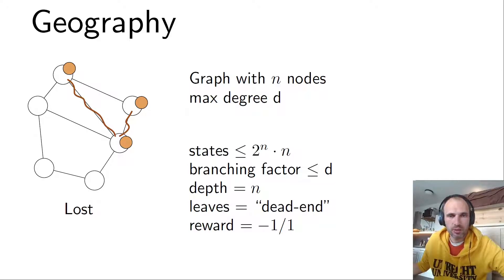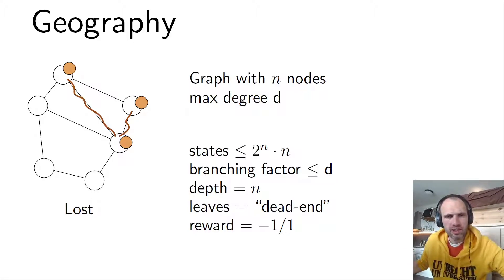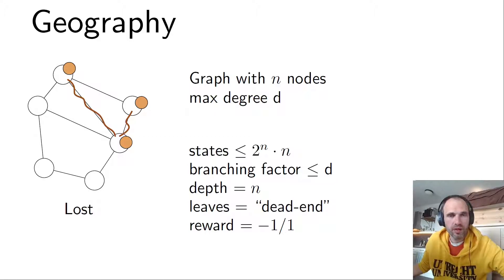Note that this is a rough estimate and of course not tight. The branching factor is d, because you can have at most max-degree options, so the max branching factor is exactly the degree. The depth of the game tree would be n, or actually n minus one because we are already given the starting node. The leaves are those game states in which you cannot move anymore, and the rewards you could set to minus one and plus one, because there are no ties in this game — there is always a winner.